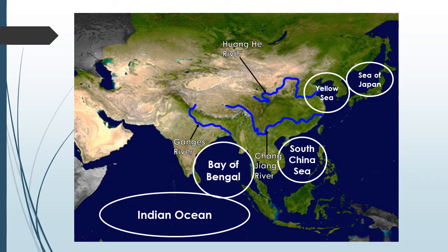This is the Huanghe River. It flows through China, north of the Changjiang. It's the second longest river in Asia and it's also called the Yellow River. It empties into the Yellow Sea. A common nickname for this river is China's Sorrow.